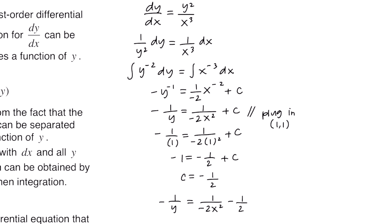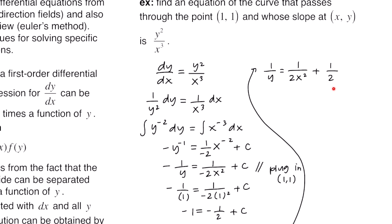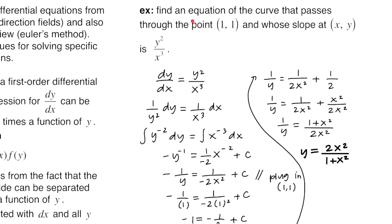Now we clean up the equation. First, multiply the entire equation by -1. Then, to combine into one fraction, multiply by x²/x². Since this is a proportion, we move everything diagonally across the equal sign to get y out of the denominator. The equation of the curve that passes through the point (1, 1) is y = 2x²/(1 + x²).